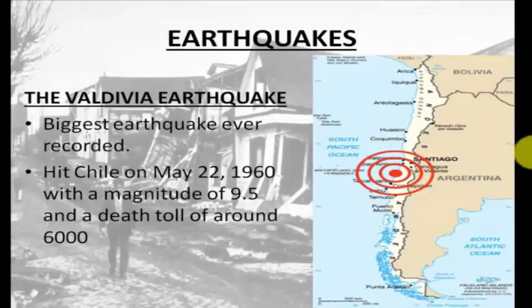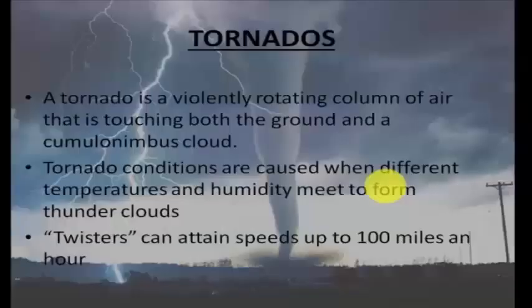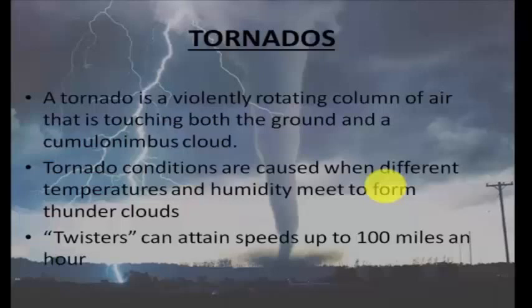Tornadoes are another naturally occurring disaster. A tornado is a violently rotating column of air that rotates while in contact with both the surface of the earth and a cumulonimbus cloud. In rare cases, it may even reach the base of cumulus clouds. Tornado conditions are caused when different temperatures and humidity meet to form thunderclouds.